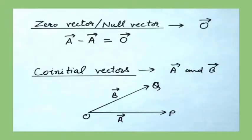Zero vector or null vector: a vector having zero magnitude is called a null vector or a zero vector. It is represented as an arrowhead over 0. A zero vector can be defined as a vector having zero magnitude and any arbitrary direction. We see that vector A minus vector A is equal to the zero vector. It cannot be a scalar.